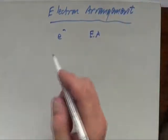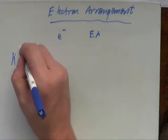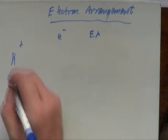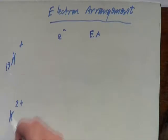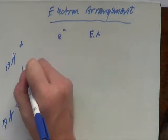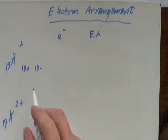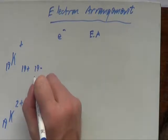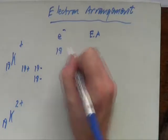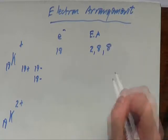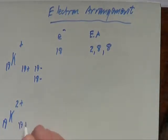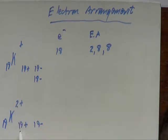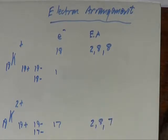Let's do potassium as +1 and +2 ions. Potassium's atomic number is 19. For K⁺: it must have started with 19 protons and 19 electrons. It's got a +1 charge — one more proton than electrons — so it must have 18 electrons. Electron arrangement: 2,8,8. For K²⁺: it started with 19 positives and negatives, two more positives than negatives, so it must have lost two electrons bringing us down to 17. Electron arrangement: 2,8,7.